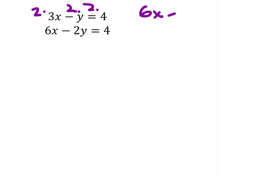That gives me 6x minus 2y equals 8. And then I have the second equation the same. It hasn't changed at all.